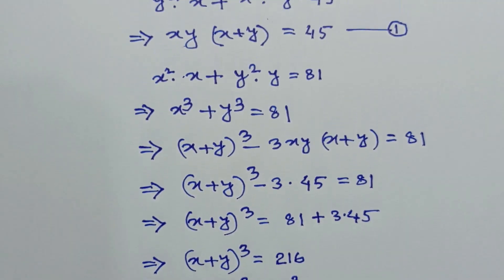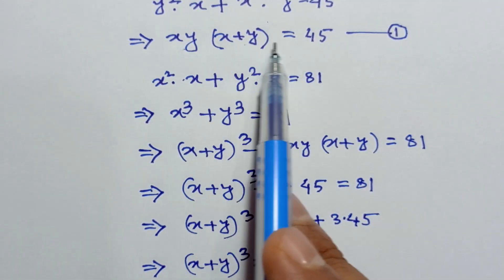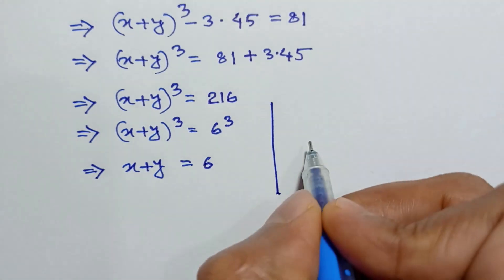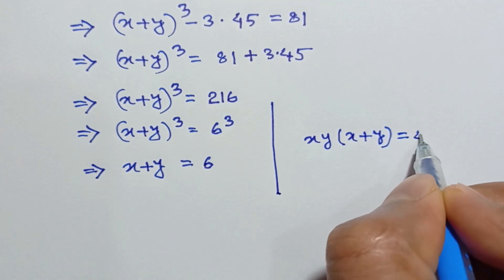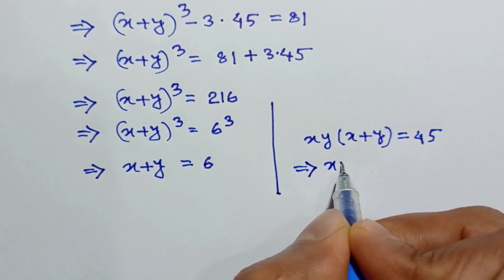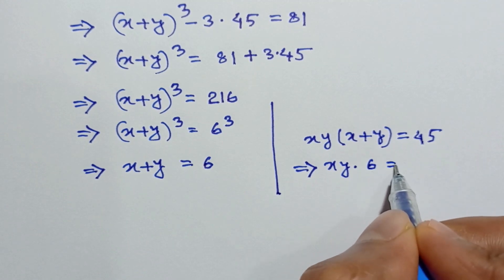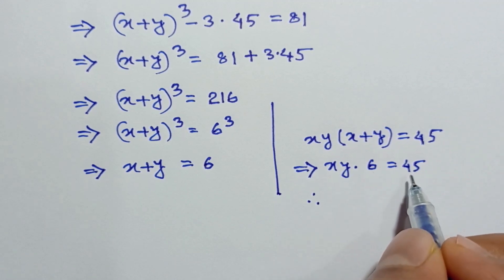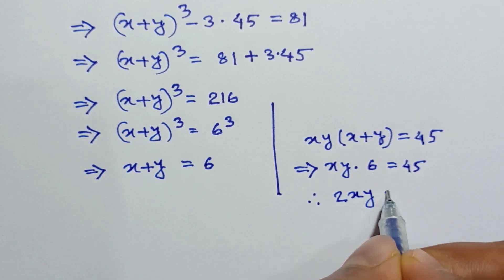Now substituting x plus y equals 6 in equation 1, we have xy times 6 equals 45. Dividing both sides by 6 gives xy equals 45 divided by 6, and so 2xy equals 15.